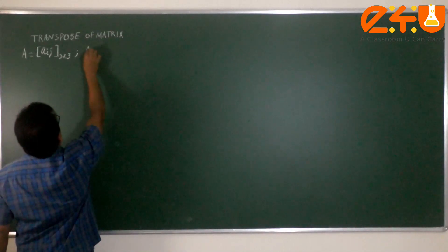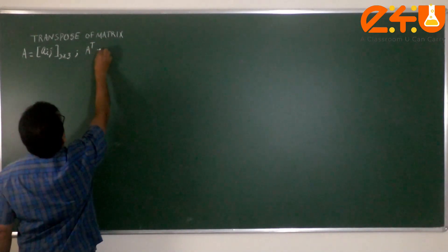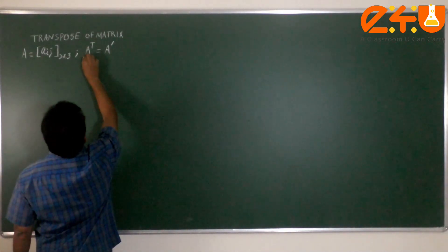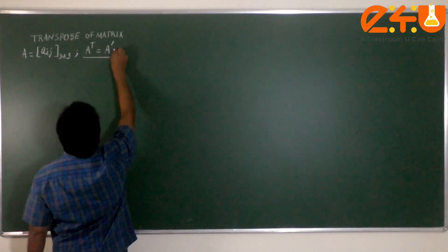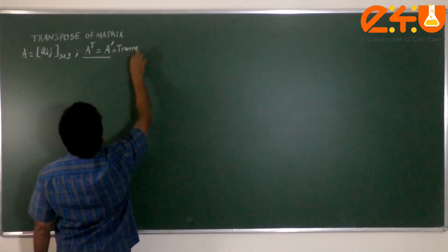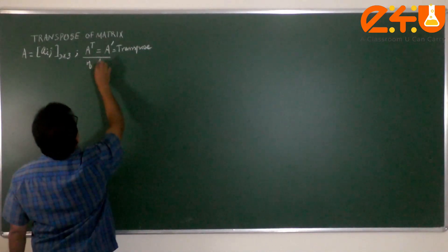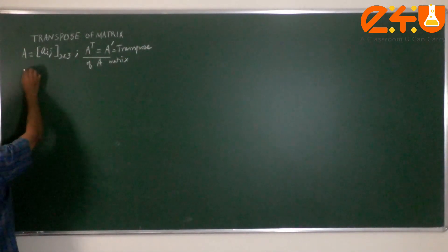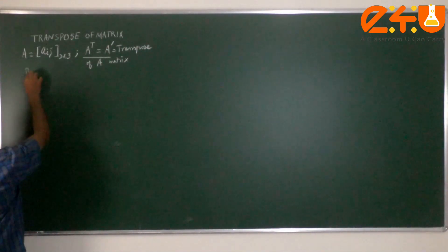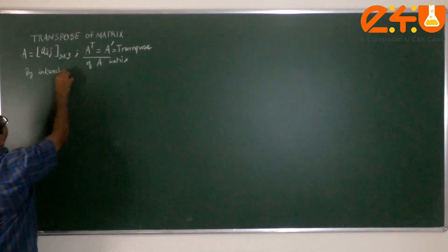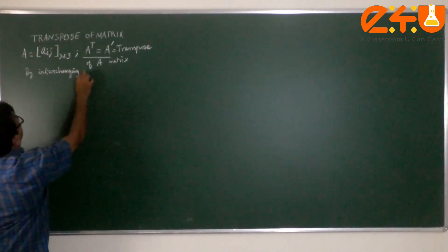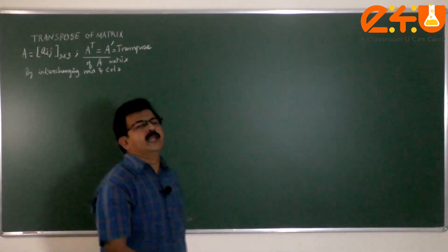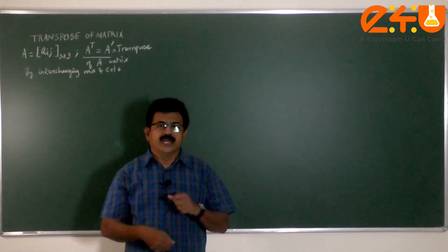The transpose of a matrix is indicated by alternative symbols. This is one symbol, this is another symbol. A transpose or A dash indicates transpose of A. How do we obtain the transpose? By interchanging the rows and columns. The columns become rows and vice versa.